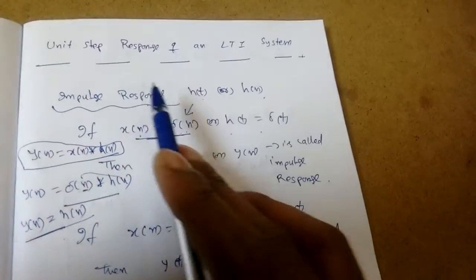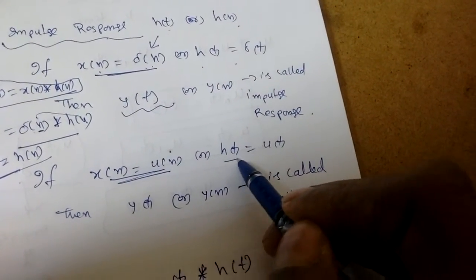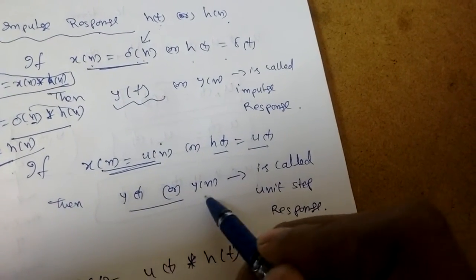Now what do you mean by unit step response? If x(n) equals u(n), or h(t) equals u(t), then the system response y(t) or y(n) is called unit step response.